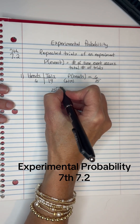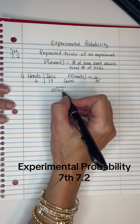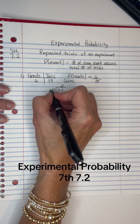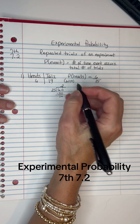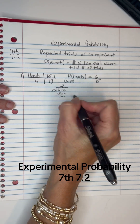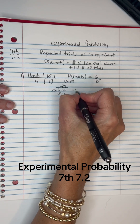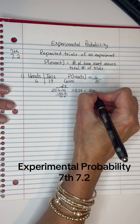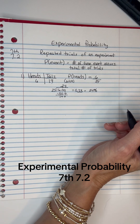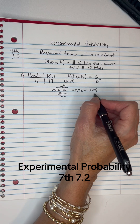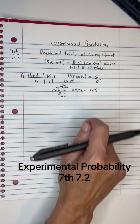25 won't go into 6, so let's add a decimal and a zero. 25 will go into 60 — 25 times 2 is 50, so it's 2. When I subtract, I get 10 left over. 25 won't go into 10, so bring down another zero. 25 will go into 100 four times. So I have 0.24, which is 24% if I do the Dr. Pepper rule and move it two places to the right. So about 24% of the time, I'm going to get heads according to my experimental probability.